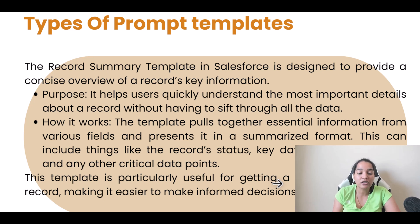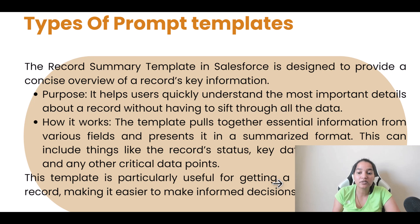The record summary template pulls together essential information from various fields and presents it in a summarized format. This can include things like the record status, key dates, important notes, and any other critical data points. In order to get a summary of a record, you can use this record summary template, which is particularly useful for getting a quick snapshot of a record and making it easier to make informed decisions or updates.